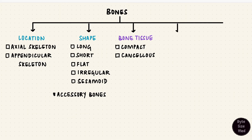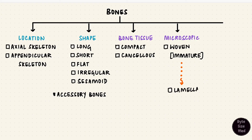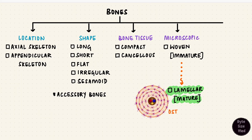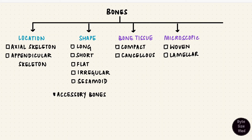Microscopically, when bone first forms by ossification it's irregular and not very strong — that is called woven bone or immature bone. This bone gets remodeled, forming lamellar bone. Most bone in the body is lamellar bone, or mature bone, which has bone tissue arranged in layers forming structures called osteons. However, some areas may still have immature woven bone, like at skull sutures or where tendons insert into bones.